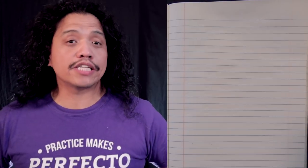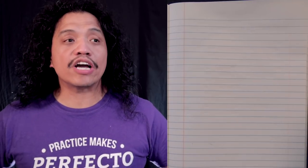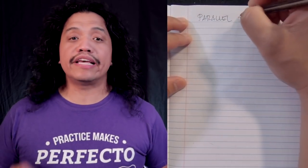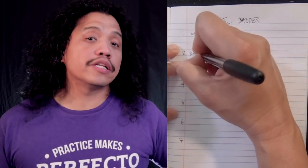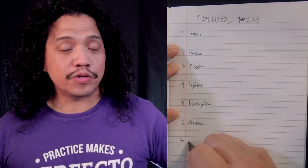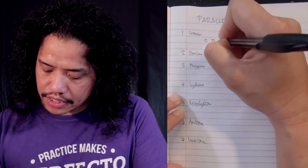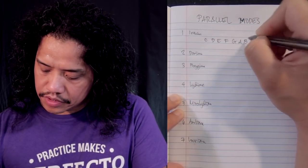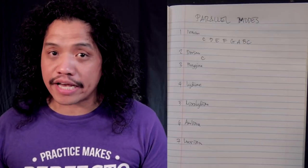In modern times the concept of modes has evolved even further to the point where we have started to think of each mode as its own separate scale. This is best illustrated when we start thinking in terms of parallel modes — we get parallel modes when we build each of the seven modes on the same root note. To illustrate this, I will build each of the seven modes treating the note C as the root for each mode.